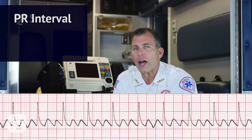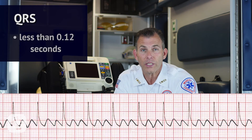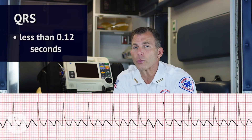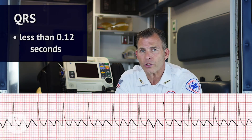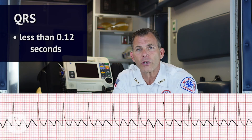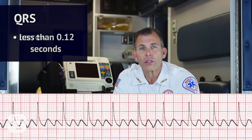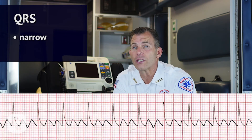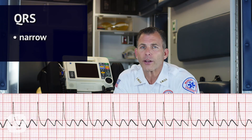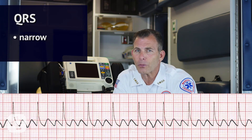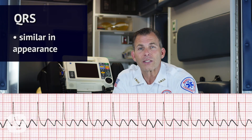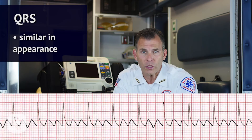Now we move on to the QRS complex of the ECG. Is the QRS interval less than 0.12 seconds? Yes, it is. The QRS is within normal range. Is the QRS wide or narrow? In this case, the QRS is narrow. Are the QRS complexes similar in appearance? We can see here that each one does look similar.